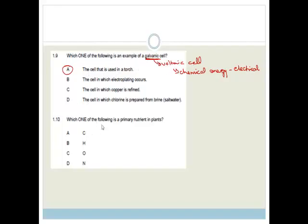Now it says, which one of the following is a primary nutrient in plants? And guys, you need to learn this. One of the primary nutrients you could actually remember from the NPK ratio. You either want nitrogen, phosphorus or potassium. And the correct answer then obviously is D, which is nitrogen.